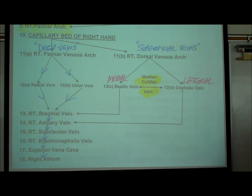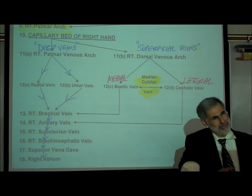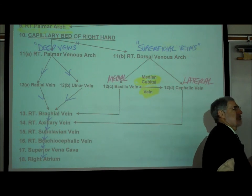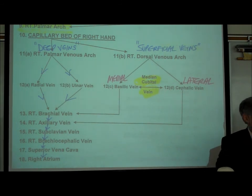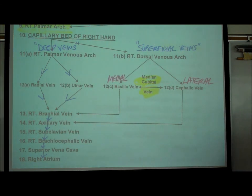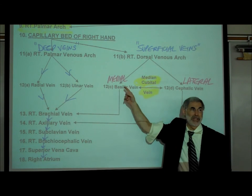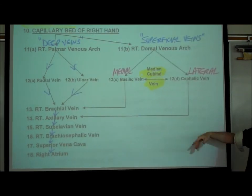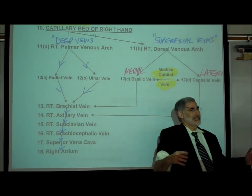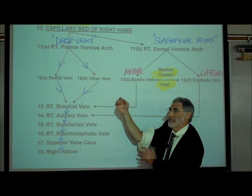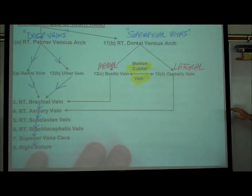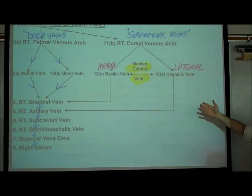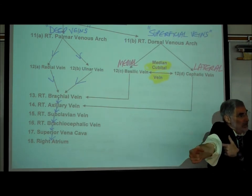A mnemonic from a former student: 'Mercedes Benz.' The basilic is on the medial side — MB — and connects to the brachial — B — so it's MBB. The basilic is medial and connects to the brachial. If the basilic is medial, then the cephalic must be lateral — it's the other side — and it connects a little bit higher up in the arm to the axillary vein.